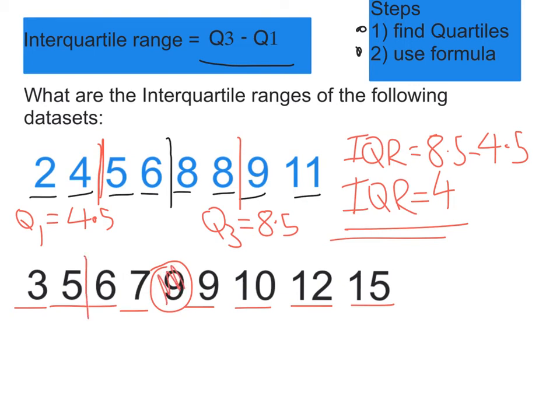So our lower quartile goes there. That's the median of the bottom half. So Q1 is 5.5.